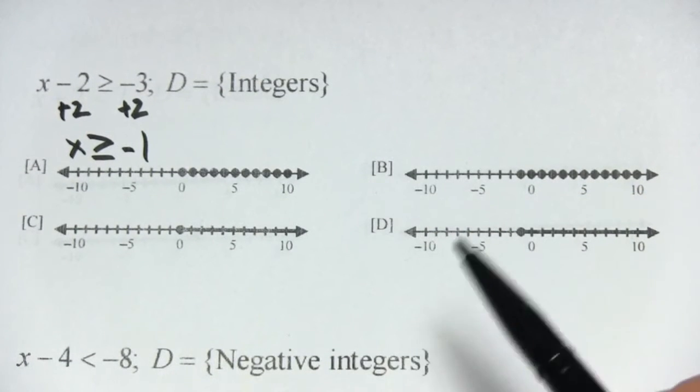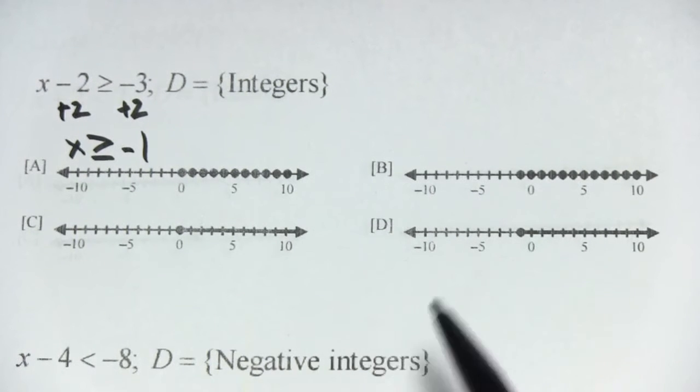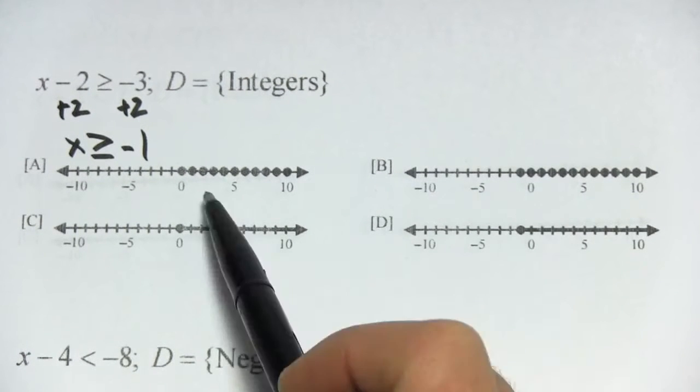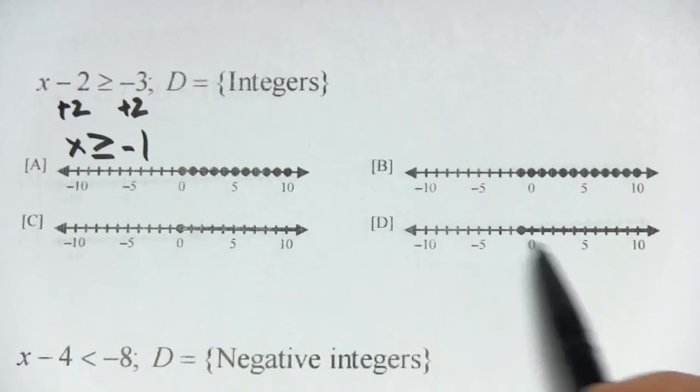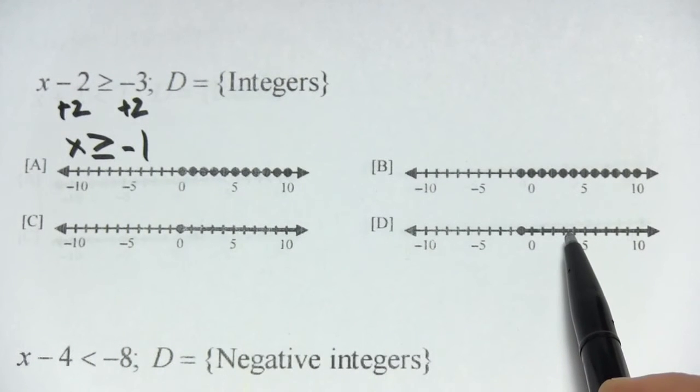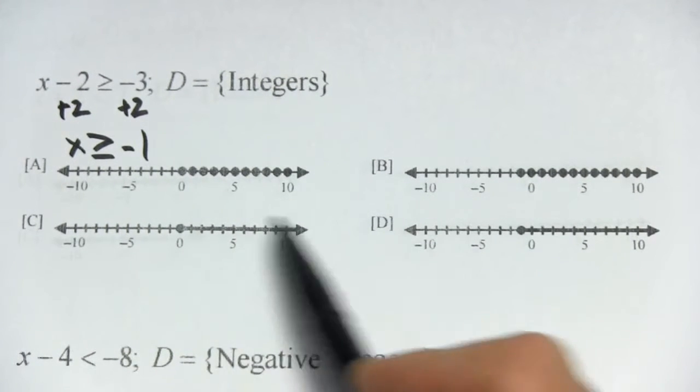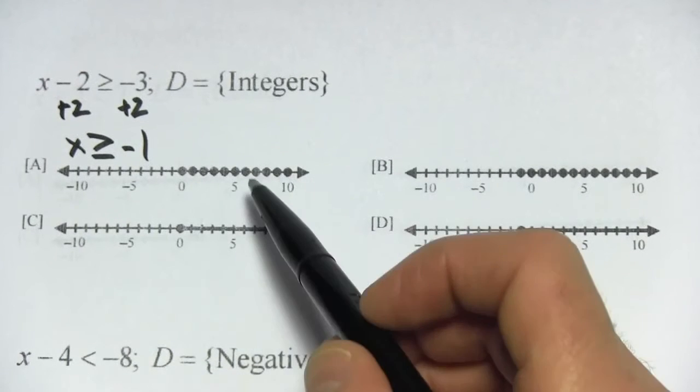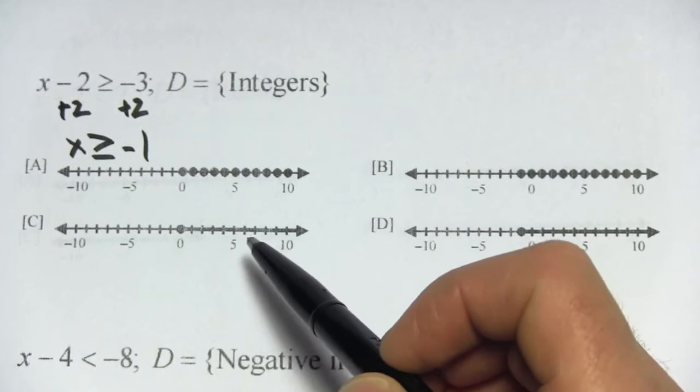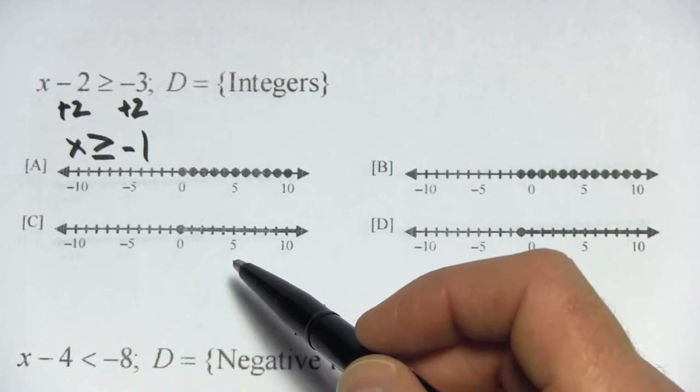On the number line, when you graph that, what it looks like is just a series of individual dots. So you can see A and B have series of individual dots where C and D are shaded all the way through. So it's going to be either A or B for our answer because we don't want to include the numbers between the integers like 2.5 and so forth.